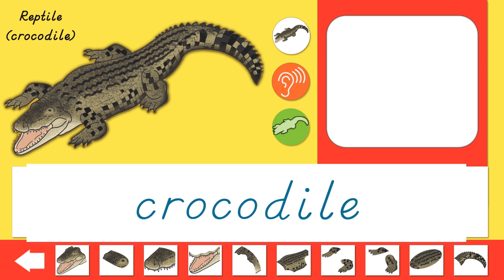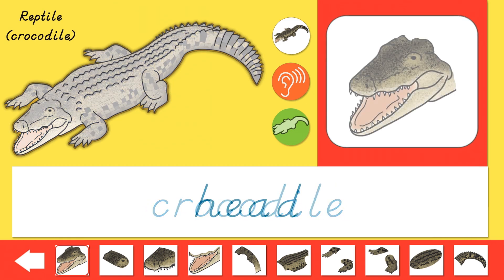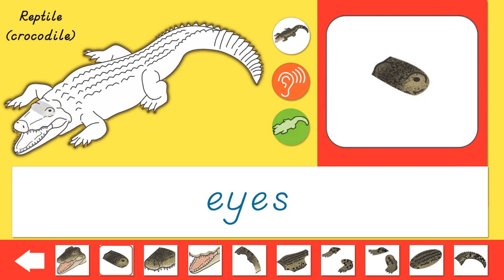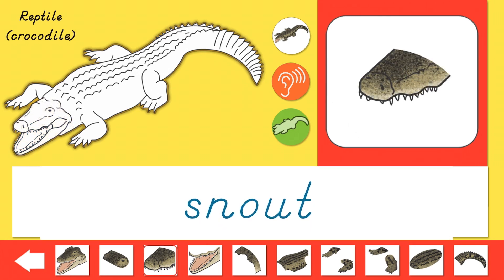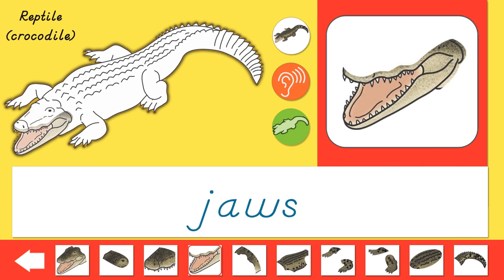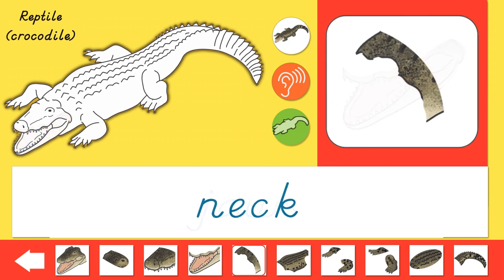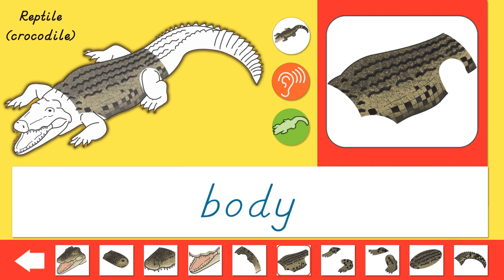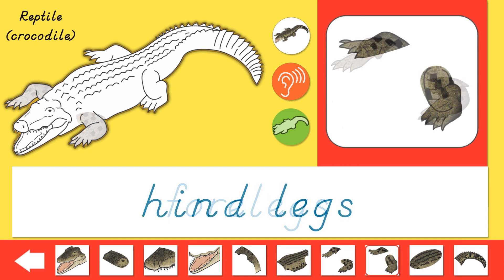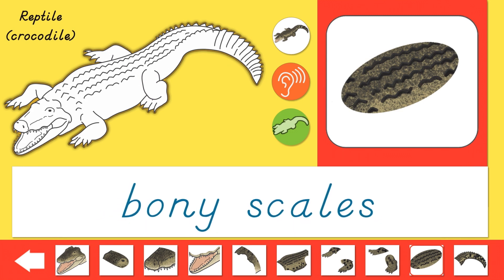Let's learn the parts of a crocodile. Head, eyes, snout, jaws, neck, body, fore legs, hind legs, bony scales, tail.